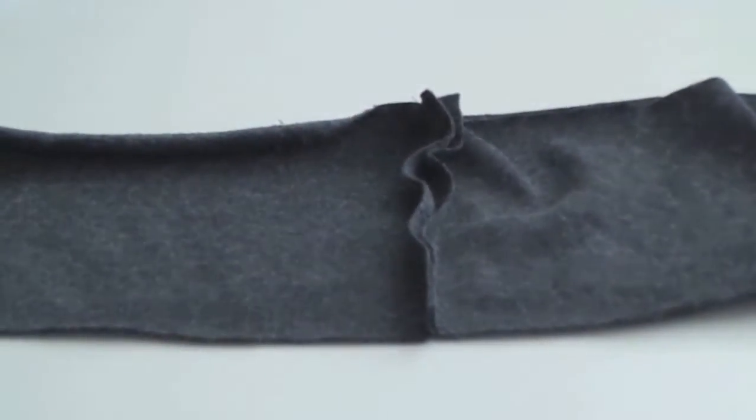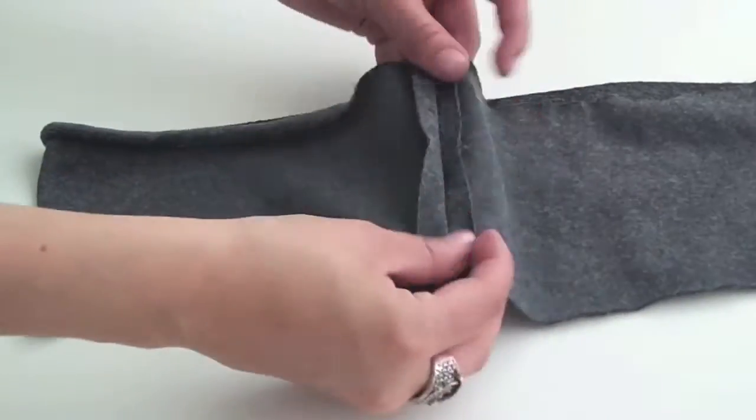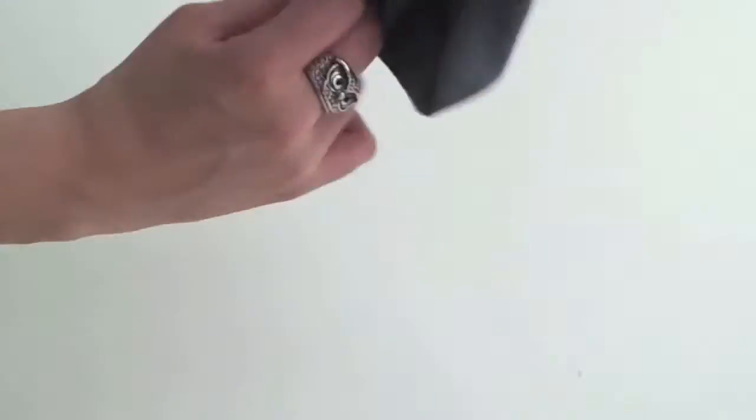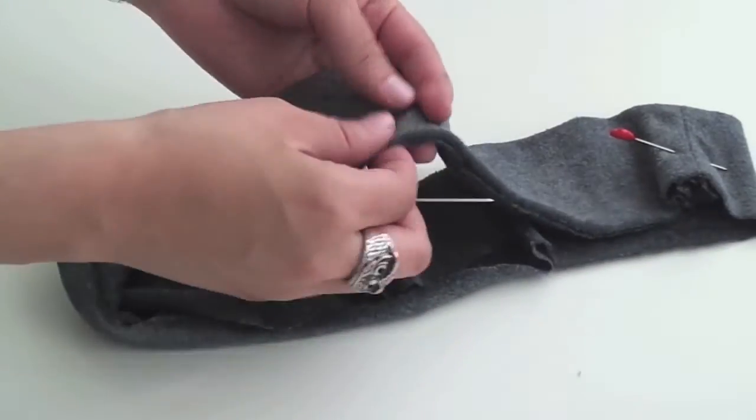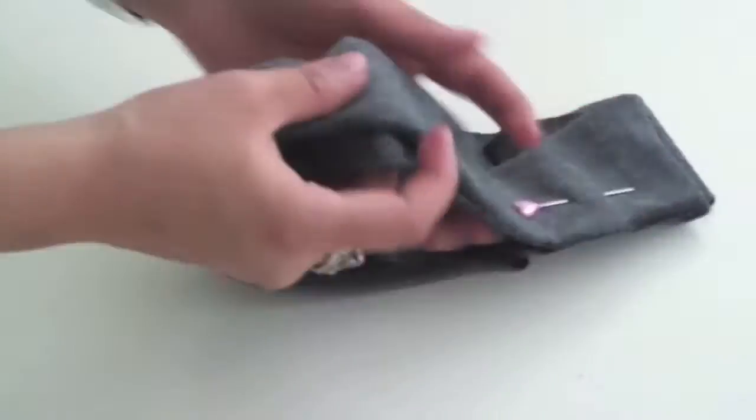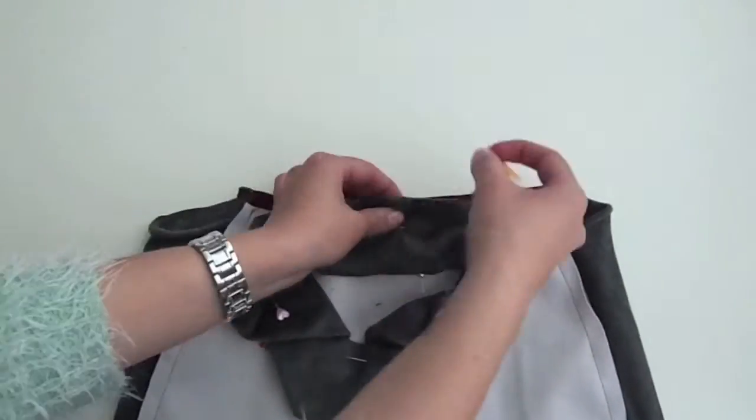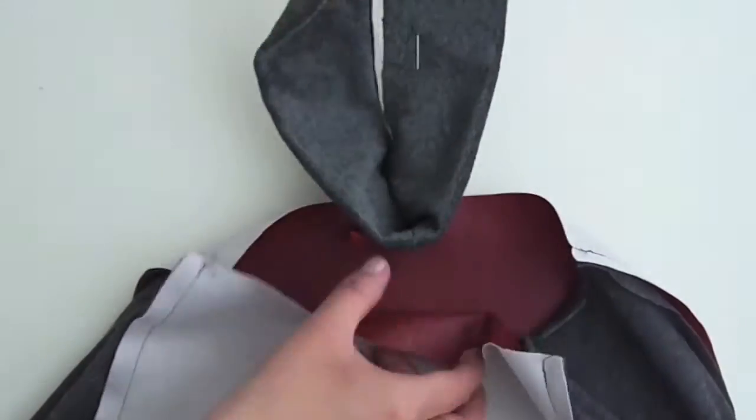When it's sewn, fold it onto itself like so, making sure that the seams are open and flat. Now I just pin it a bit around because it's knit, so that it's easier to work with it, and we are going to put it onto the skirt.